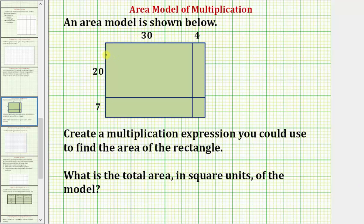An area model is shown below. Notice how we have this large rectangle divided into four smaller rectangles, where this length is 30 units and this length is four units. And therefore the total length would be 30 plus four, or 34 units.